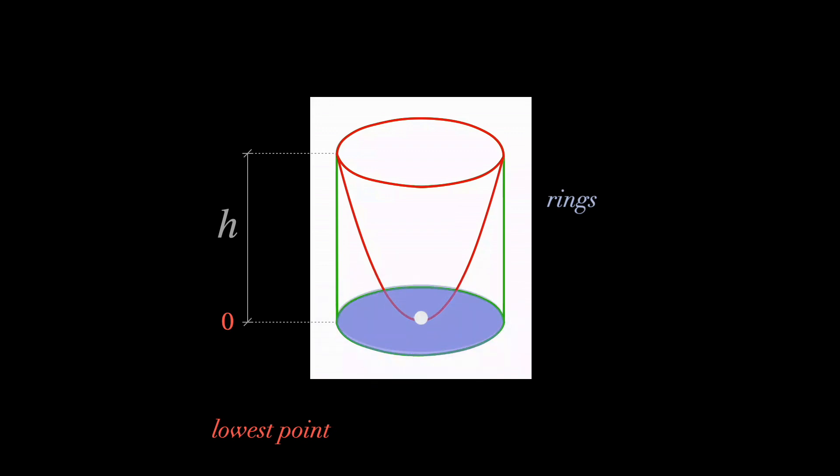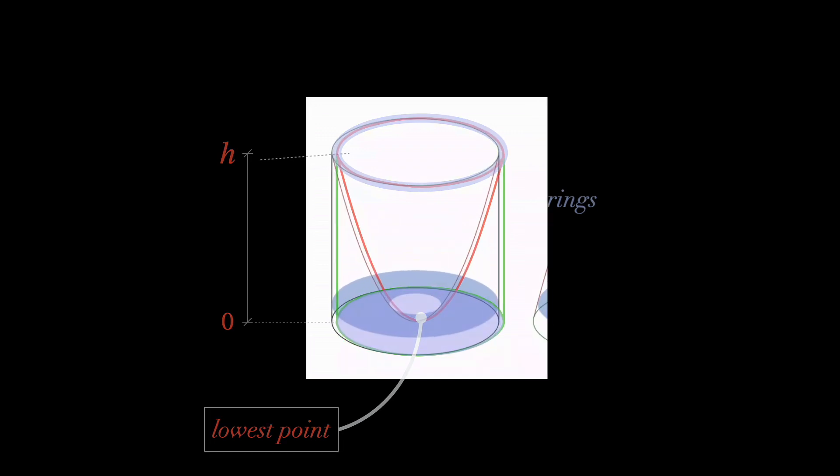The cross-sections of this solid, for different heights, are rings, such that at the base the cross-section is an entire disk without a single point, corresponding to the minimal point of the paraboloid that you carved out of it. As we move up, the ring gets thinner and thinner to the point where it's just a circle at the maximum height H.